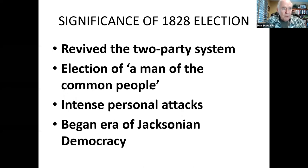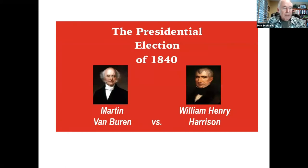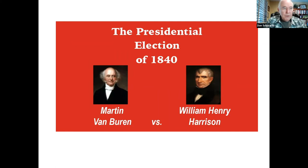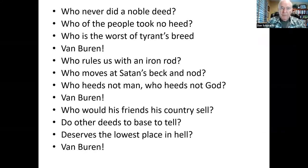In 1834, the Whig Party made its first appearance. The election of 1840 pitted the Democrat Martin Van Buren against the Whig candidate William Henry Harrison. This election was far more civilized than the contentious contest of 1828, yet it did have a degree of political aggressiveness. A song featured in the 1840 election about Martin Van Buren went: 'Who never did a noble deed? Who of the people took no heed? Who is the worst of tyrants' breed? Van Buren. Who rules us with an iron rod? Who moves at Satan's beck and nod? Who heeds not man? Who heeds not God? Van Buren. Who would his friends, his country sell? Do other deeds too base to tell? Deserves the lowest place in hell? Van Buren.'